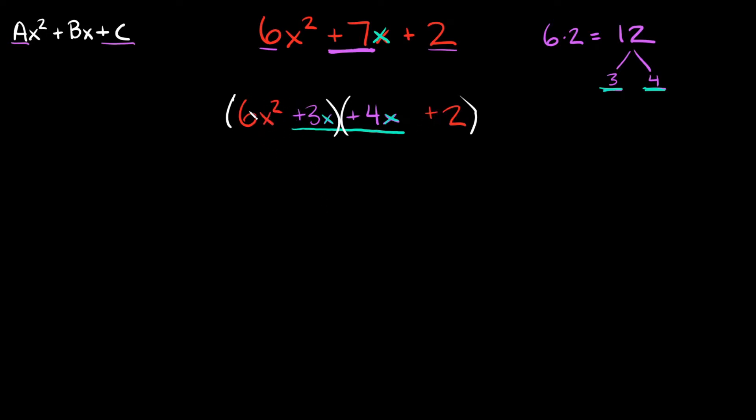Then you just factor each of these little groups individually. Let's first factor this one right here 6x squared plus 3x. Is there anything we can pull out from both of these terms? Well yeah there's 3x, we can pull a 3x out of both of those. And then here inside the parentheses we're just going to be left with 2x plus 1.